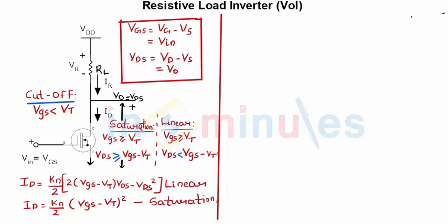So now let's equate the value of my current in the linear region with the value of my current flowing across the resistor. Let's quickly do that.